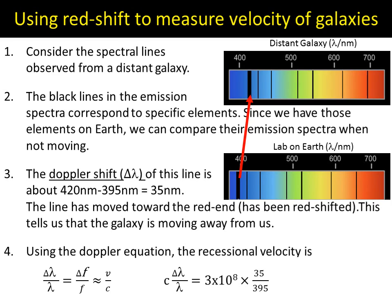We rearrange the formula where 395 is our original wavelength, 35 is our change in wavelength. The Doppler shift divided by the original stationary wavelength gives us that. It gives us a recessional velocity for this galaxy of 2 times 10 to the 6 meters per second away from us.